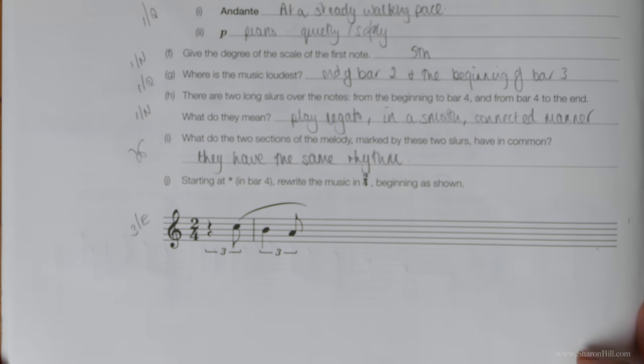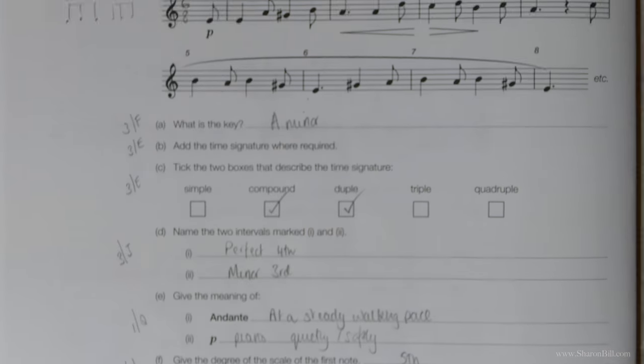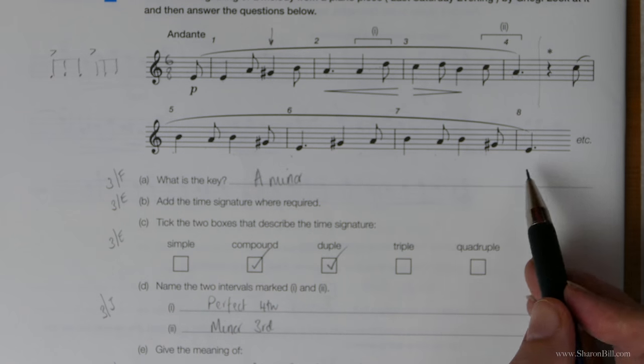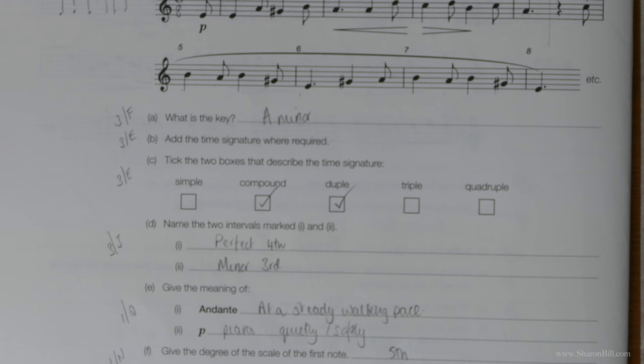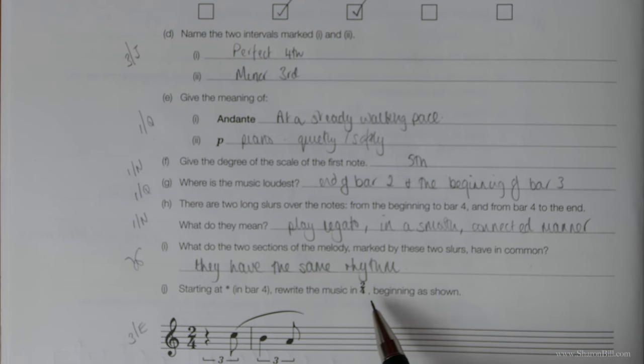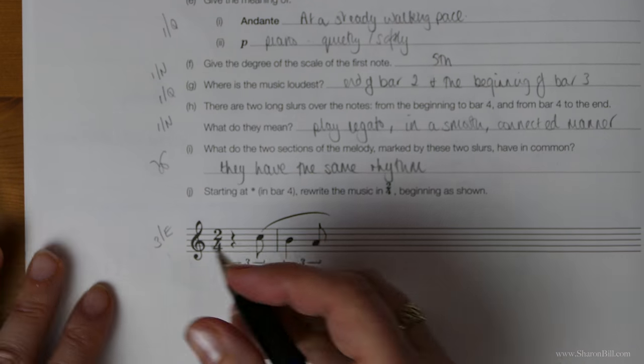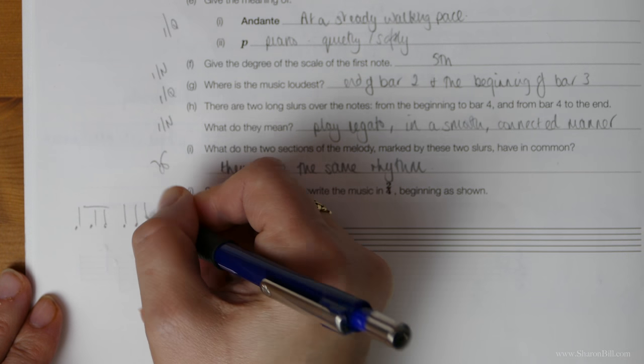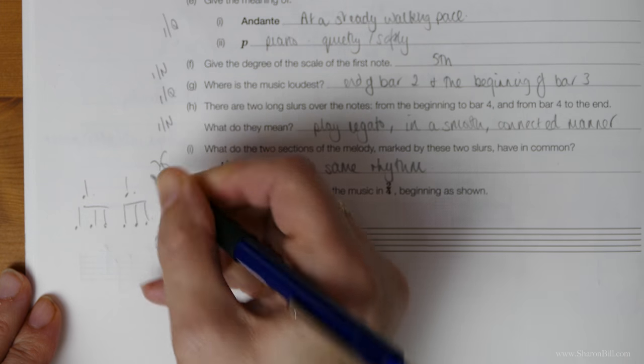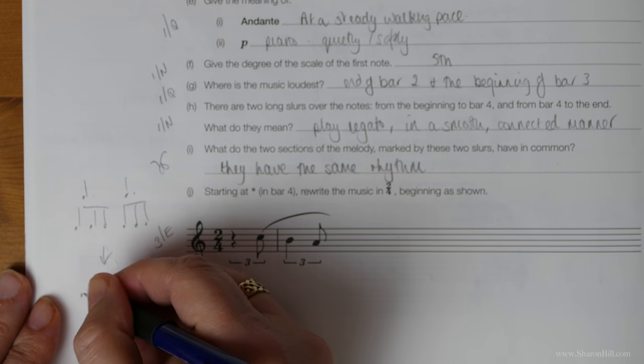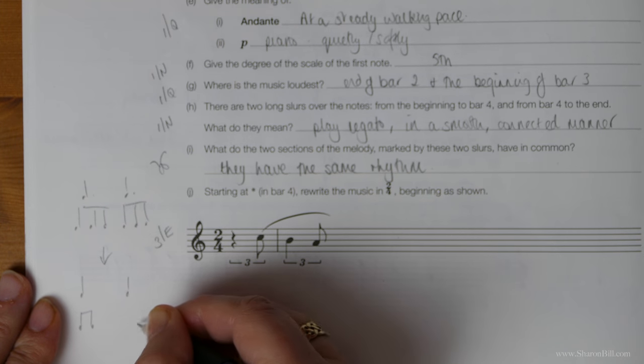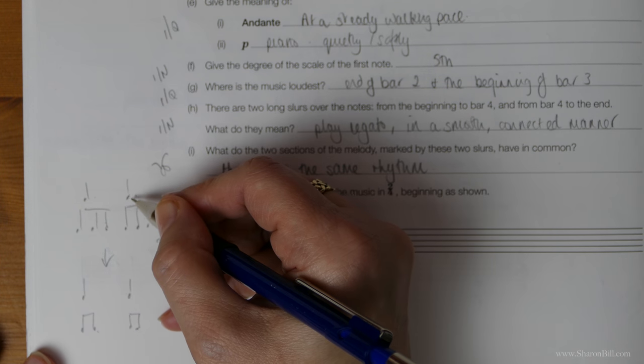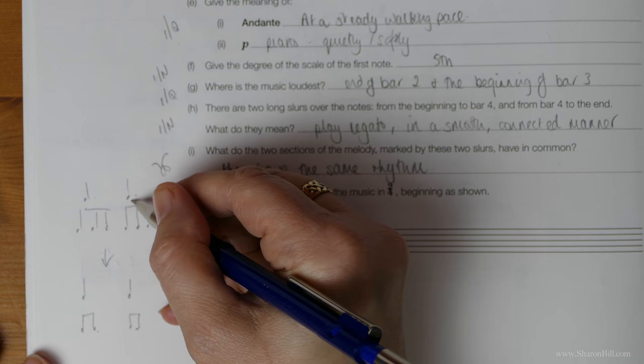And then this last one, starting at the asterisk in bar 4, so from here to the end. It's a bit tricky. It's over the bar line. I prefer it when we can just keep it aligned. We've got to rewrite the music in two 4s. So what we're doing, we're going from Duple Compound, which is two dotted crotchets, to Duple Simple, which is plain crotchets, which divides into groups of two. And so we've got to shrink down, and we do that by removing the dot and adding a triplet.